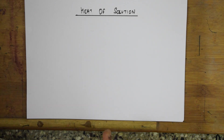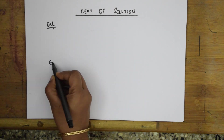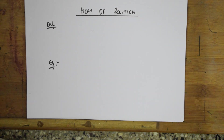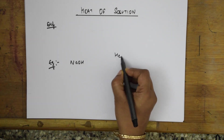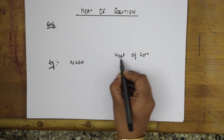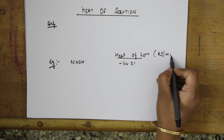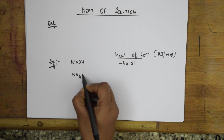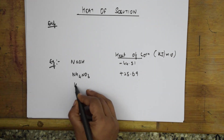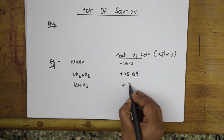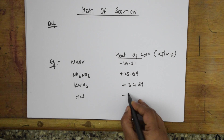Let me take certain examples and then we will come back to the definition. Suppose I take sodium hydroxide — for this, the heat of solution is minus 44.51 kilojoules per mole. Next, ammonium nitrate: the heat of solution is plus 25.69. KO3: it is plus 34.89. HCl: it is minus 74.84.